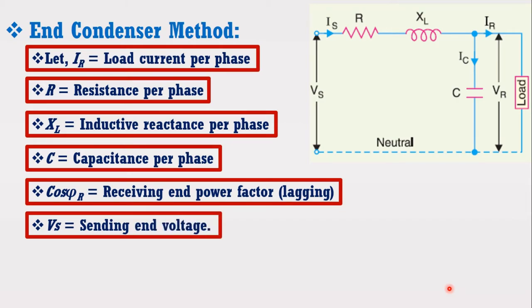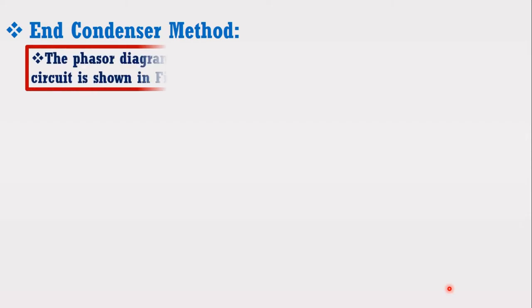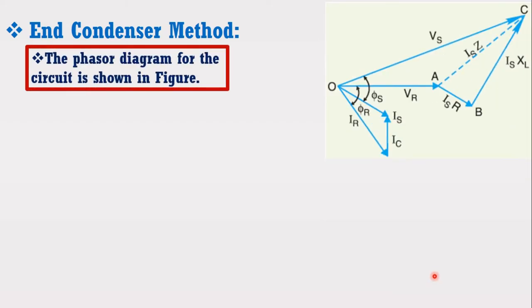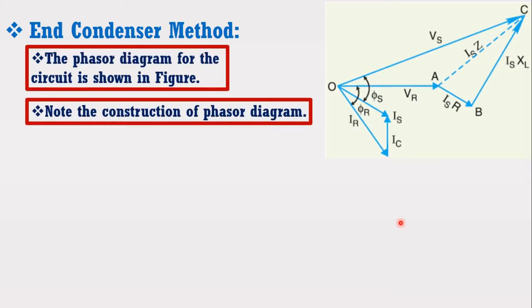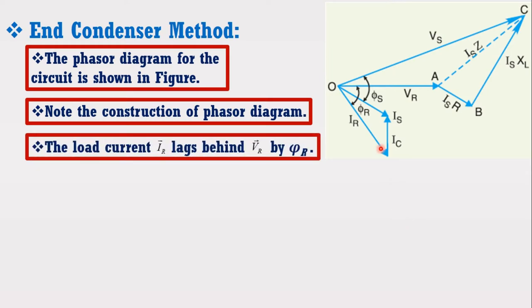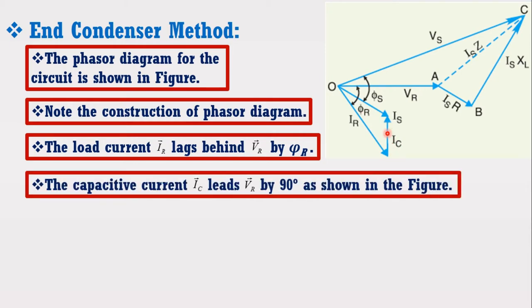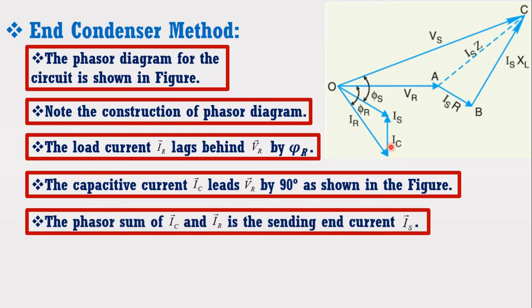Now, the phasor diagram for the circuit is shown in the figure. Note the construction of phasor diagram. The load current IR lags behind Vr by phi R. The capacitive current IC leads Vr by 90 degrees as shown in the figure. The phasor sum of IC and IR is the sending end current IS.